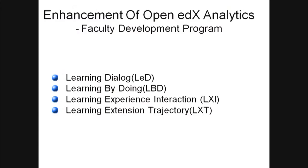Fourth is the learning extension trajectory. This course has offered different kinds of resources like PDF, text files, or HTML content. They want to know which resources are mostly accessed — which kind people prefer — and if they access more than one resource, what is the pattern of accessing. This is the kind of analysis they want to do.